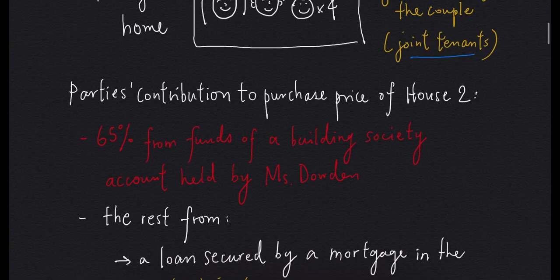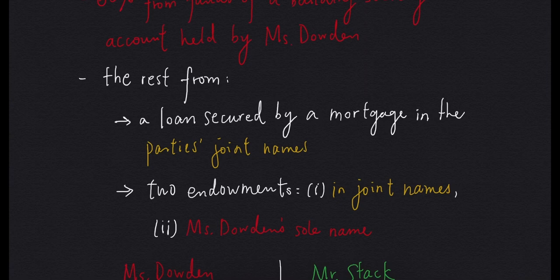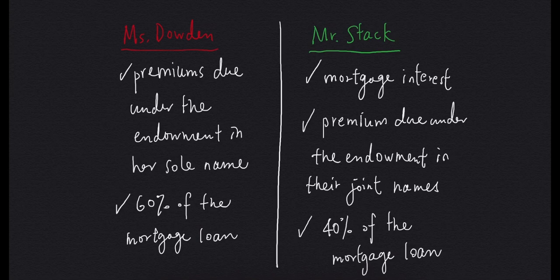This was how they contributed to the purchase price. 65% came from funds of a Buddhist society account held by Ms. Dalton. For the rest, they were from a loan secured by a mortgage in their joint names and two endowments, one in their joint names and one in Ms. Dalton's name. Ms. Dalton paid for the premiums due under the endowment in her sole name and 60% of the mortgage loan. Mr. Stagg paid for the mortgage interest, the premium due under the endowment in their joint names, and 40% of the mortgage loan.